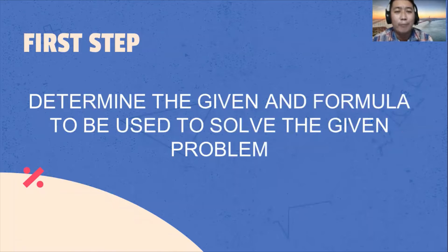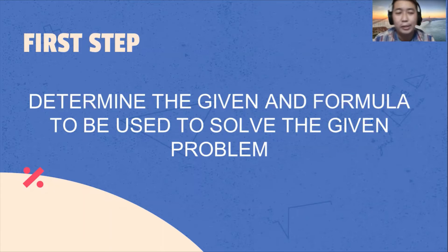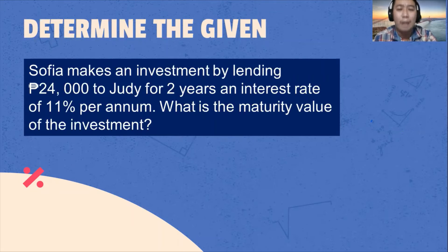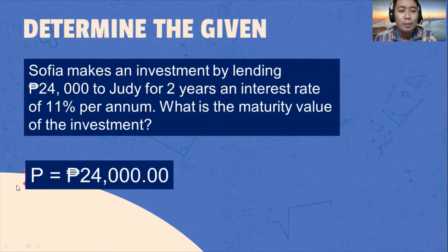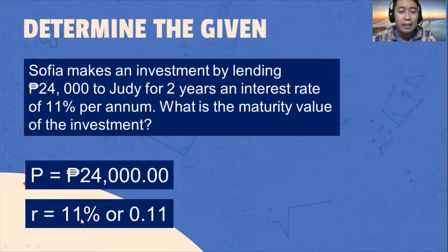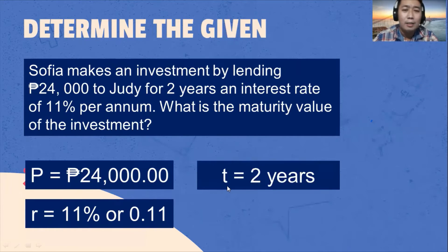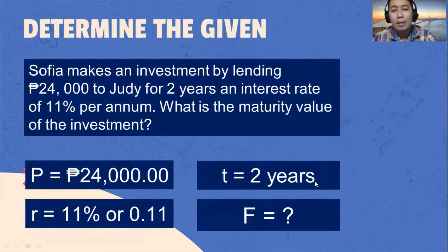Let's identify the steps in solving for the maturity value. First, identify the given; then identify the formula to be used. From the problem, the principal amount is 24,000 pesos. The interest rate is 11%, which we convert to decimal by dividing 11 by 100, giving us 0.11. Time is two years. We are looking for the maturity value or final value.